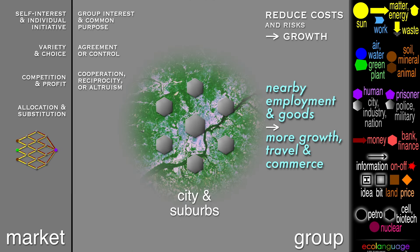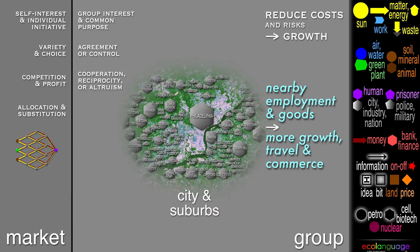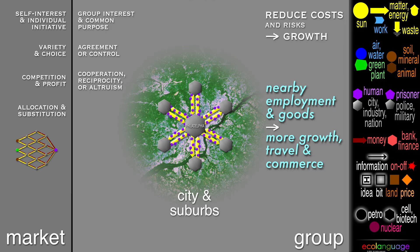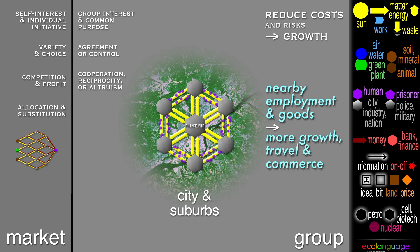A city with suburbs such as Philadelphia, which is really shaped like this, historically provided nearby employment and goods to the suburbs. Here we show the traveling people as flows too. This helped the suburbs grow into more commerce and travel between themselves.